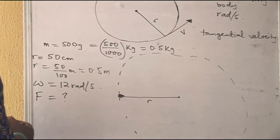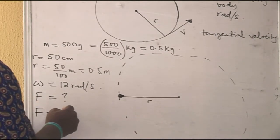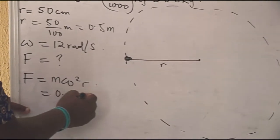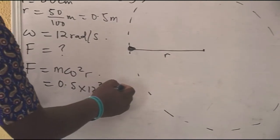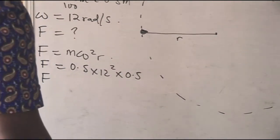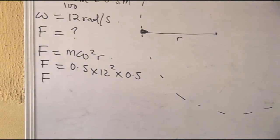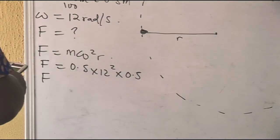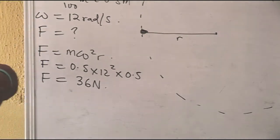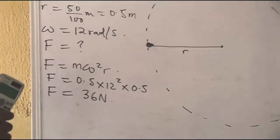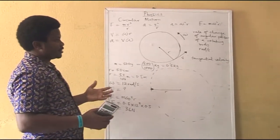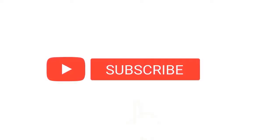Centripetal force in terms of mass, angular velocity, and radius is F = mω²r. Since we have standardized our units, we substitute directly: 0.5 × (12)² × 0.5 = 0.5 × 144 × 0.5 = 36 newtons. So the centripetal force is 36 newtons. With these examples, I hope we have been able to understand the basis of circular motion. There is more to it, and in our subsequent class we will cover the other parts.